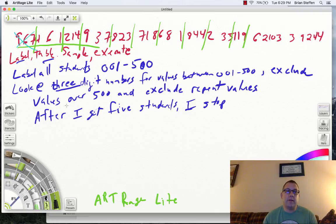461 is. So I've got 461 is the first student I select. Circle it here if I want to. Then I've got 214, which is inside my range. So I'm going to use 214. I'm not going to use 937.